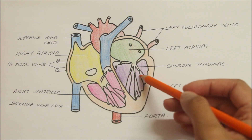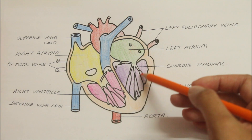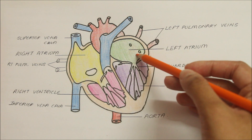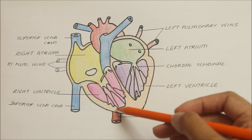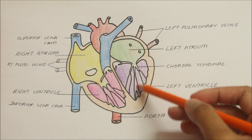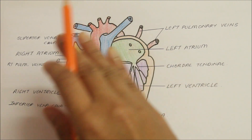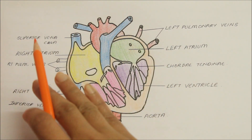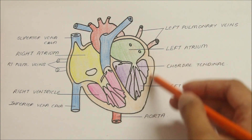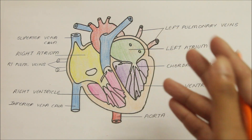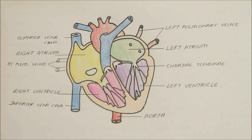Moving on to the left ventricle and looking at its position: the left ventricle receives oxygenated blood from the left atrium and pumps it into the aorta. It forms the apex of the heart, the part of the sternocostal surface, most of the left border and the left surface, and the left two-thirds of the diaphragmatic surface of the heart.